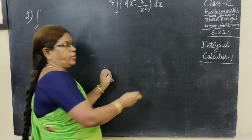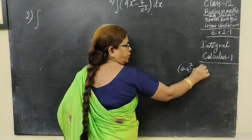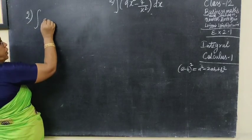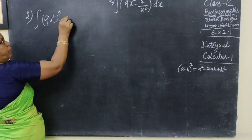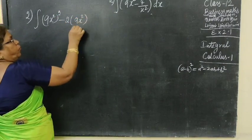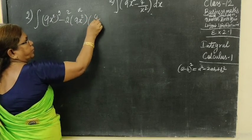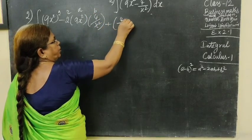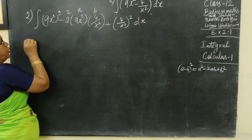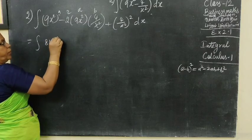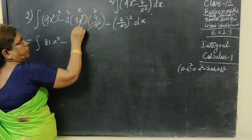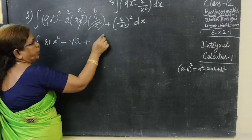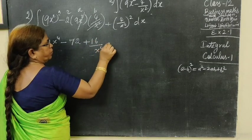Now question number 2. We use the (a - b)² formula: (a - b)² equals a² - 2ab + b². Here a² equals 9x², so expanding: 9x² minus 2ab plus 4/x², and 4/x² whole square dx. So this equals integral of 81x^4 minus 72 plus 16/x^4 dx.